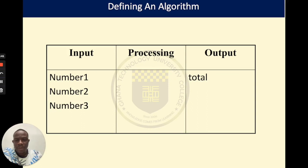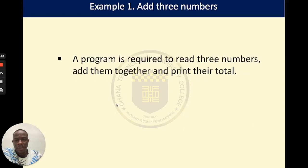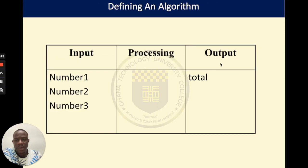How do we approach this? By first designing our summary table. Our summary table has three columns: the input, the output, and then the processing. Looking at the problem, our program is required to read three numbers, meaning that our input would be three numbers — number one, number two, and number three. Look at how we have chosen the names of the containers that we expect to house the three numbers that will be provided by the user.